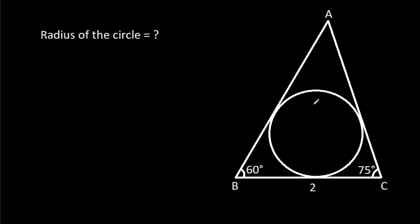In this video, we have been given a circle inside a triangle where BC is 2, angle ABC is 60 degrees, and angle ACB is 75 degrees. We have to find the radius of the inscribed circle.